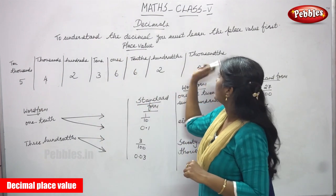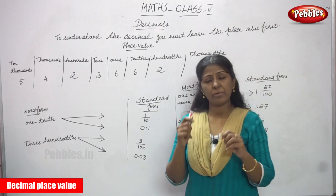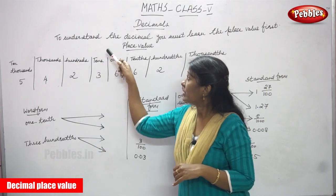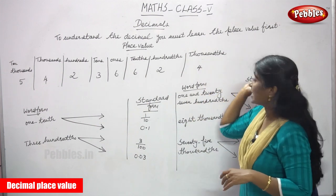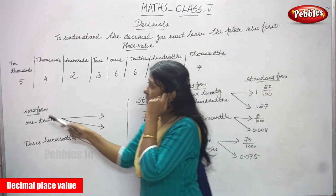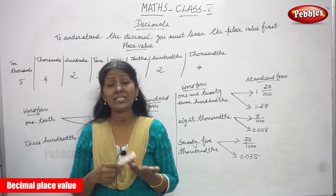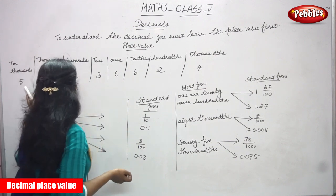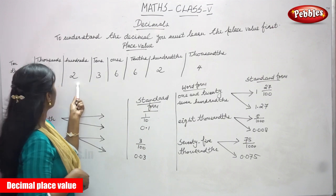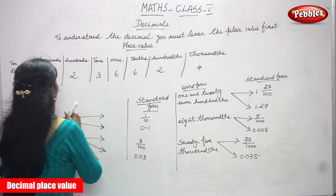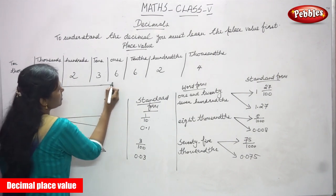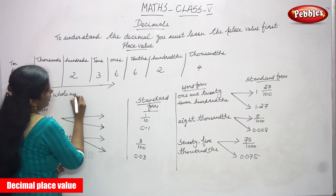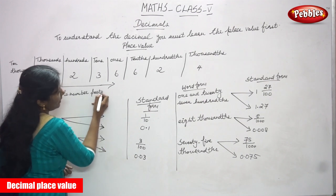To understand the decimal, you must learn the decimal place value first. Before we enter into decimal numbers, we must know the place value of decimal numbers. There are two parts: one is a whole part and the other is a decimal part. The whole part is the whole number part — ten thousand, thousand, hundred, ten — that you know very well.